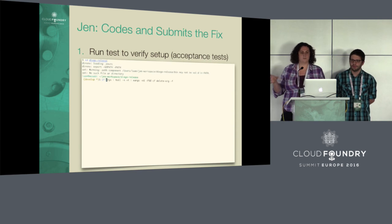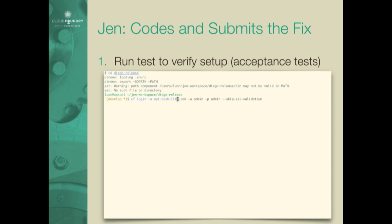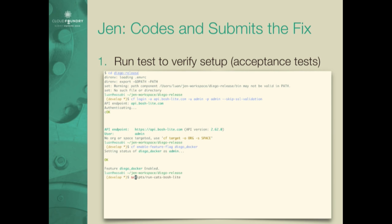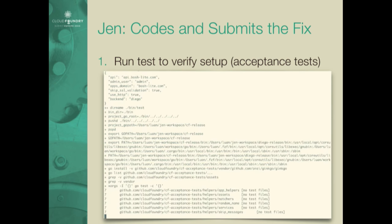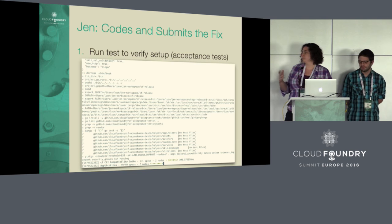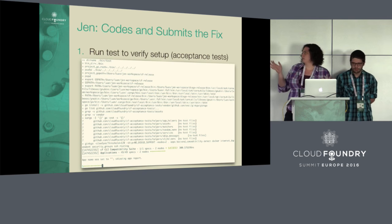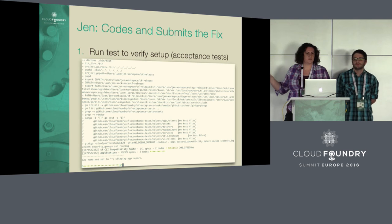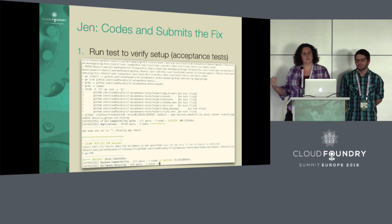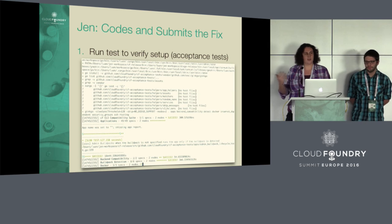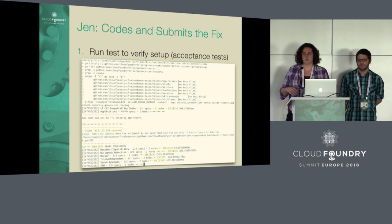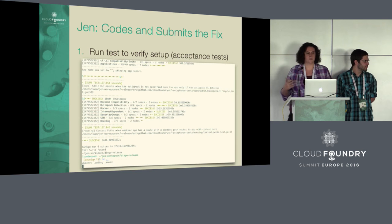The third test suite is the acceptance tests, also called CATs. These are what we need Bosh Lite for — they verify CF is working correctly from an end-user perspective, using the CF CLI directly to make sure basic scenarios work end to end. We want to make sure everything is passing with these acceptance tests locally before starting development, so we know the environment was clean before we made any changes.